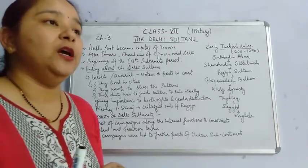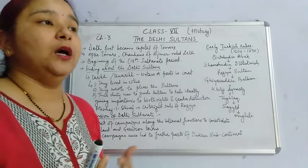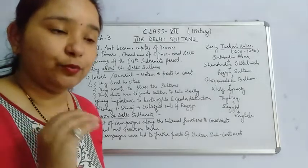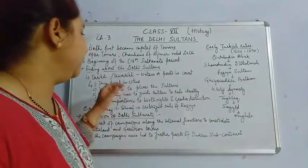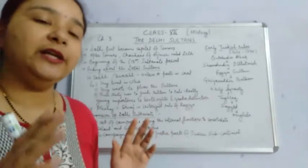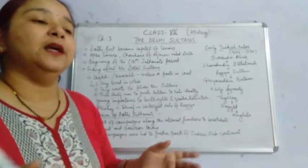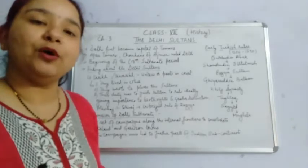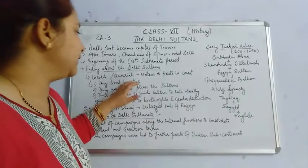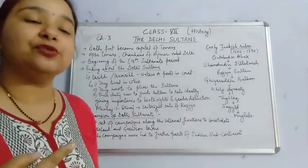Before considering their accounts as a source of history, we as history learners and historians need to keep a few points in mind. First of all, these people who were writing histories only lived in the royal court and in the cities — they were least bothered about the rural areas and had never seen the villages.